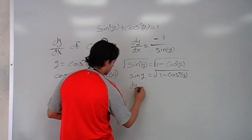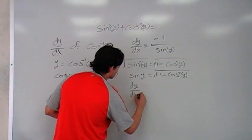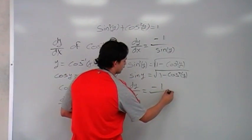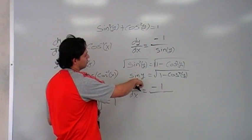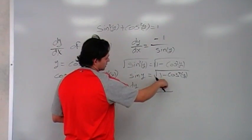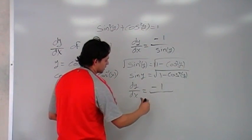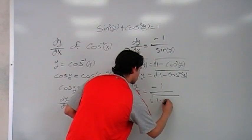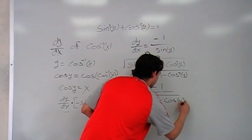So, we're going to have dy dx is equal to negative 1 divided by, now we know that our sin of y is equal to this, sin of y is equal to this, now we have square root of 1 minus cosine squared of y.